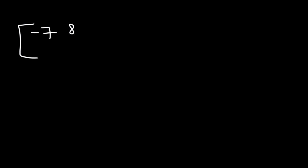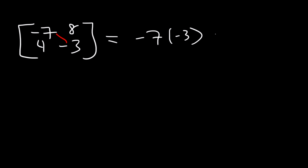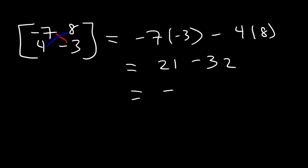Now it's your turn. For the sake of practice, try this one: negative 7, 8, 4, negative 3. So it's going to be negative 7 times negative 3, and then minus 4 times 8. Negative 7 times negative 3 is 21. Negative 4 times 8 is negative 32. 21 minus 32 is negative 11. So that's how you can find the determinant of a 2x2 matrix.